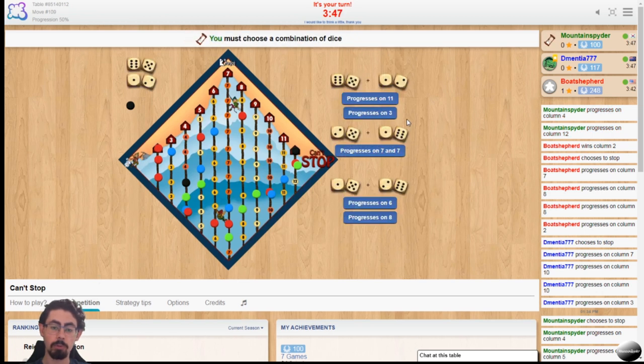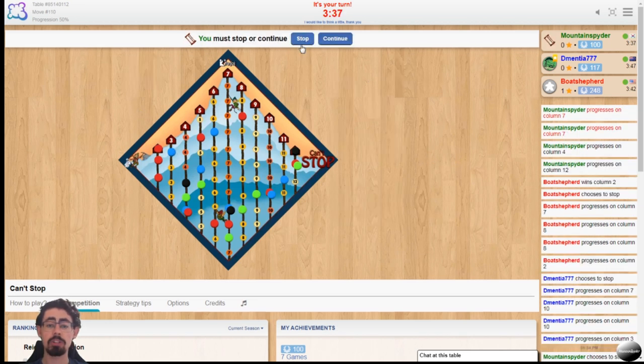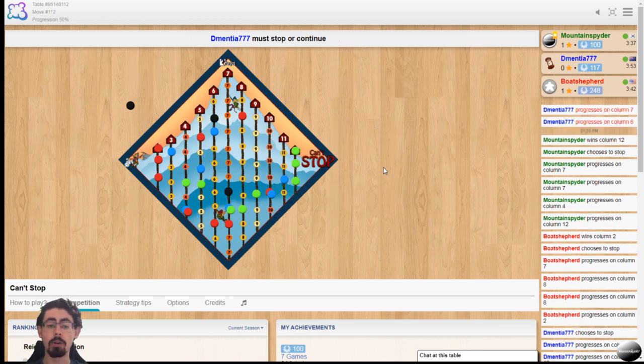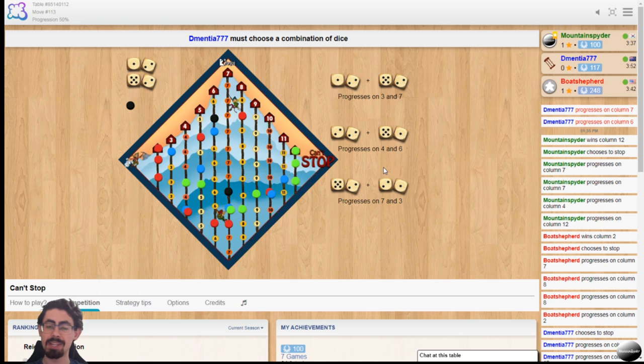I'll roll one more time just to progress a little bit further. I guess I can double tap seven. I'm going to stop here, because now I've essentially closed 12, which is really good. So essentially now I have one VP, and our red player has one VP, because we've both closed one of the lines, one of the peaks. So a third of the way to victory.